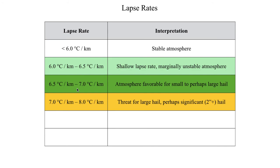At 7 to 8 degrees C per kilometer, things change. Assuming you've got the right thunderstorm mode — supercells — and a favorable wind profile, lapse rate values of 7 to 8°C/km are when you might have to start worrying about significant hail, defined as anything over 2 inches in diameter. These are just rules of thumb, not set-in-stone golden rule numbers — just expectations you might have if you see values like this on a severe weather day.